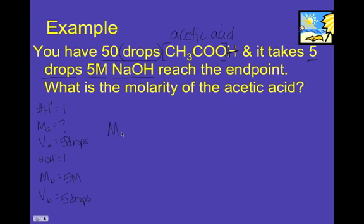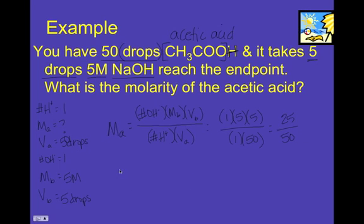And so the molarity of the acid is going to be equal to the number of hydroxides times the molarity of the base times the volume of the base divided by the number of hydrogens times the volume of the acid. So now I just got to plug in my numbers. My hydroxide was one. My molarity of the base was five. My volume of the base was five. Divide that by the number of hydrogens, which was also one, and the volume of the acid, which is 50. And I end up with 25 over 50, which means I have a molarity of 0.5 molar.